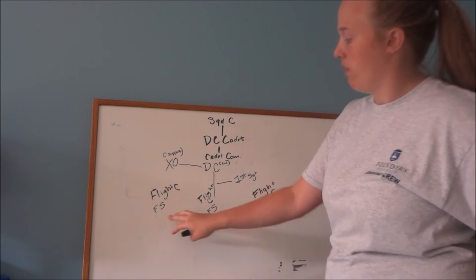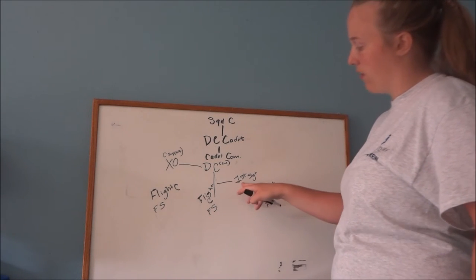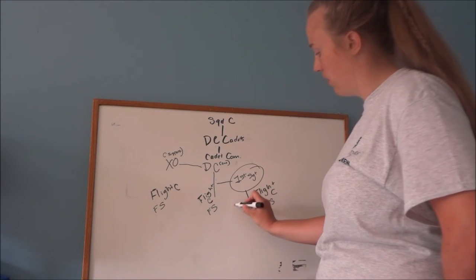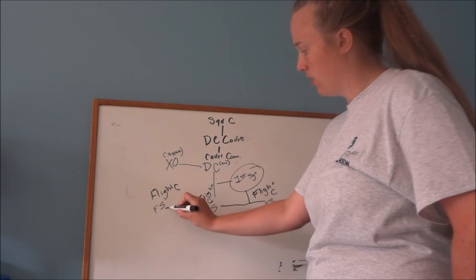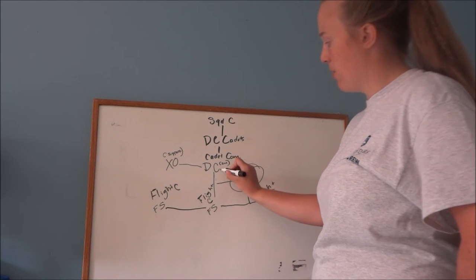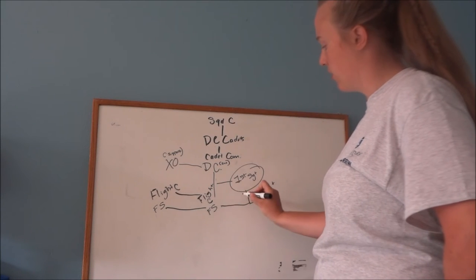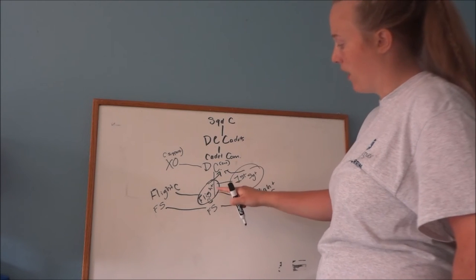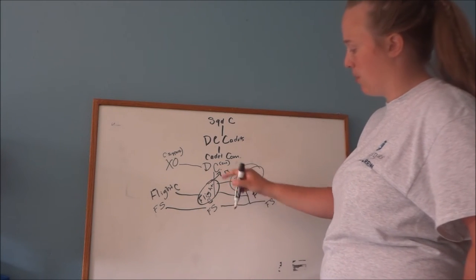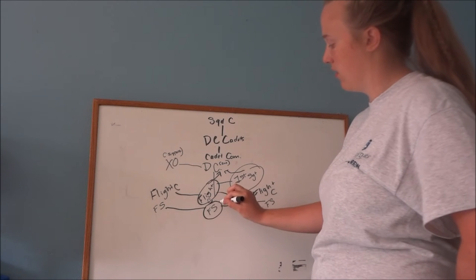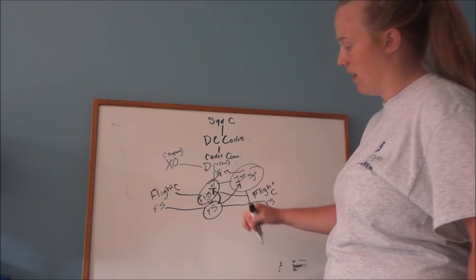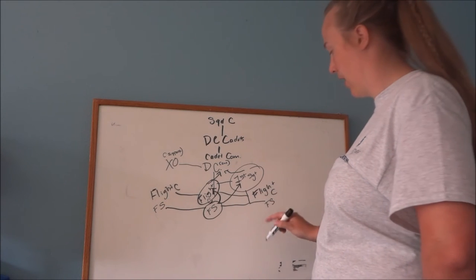So this would just be a three flight squadron and you have your first sergeant which is in charge of your flight commanders. Then you have your deputy commander, who's in charge of your flight sergeants. Your first sergeants and your flight commanders are both going to report to the deputy commander. While your flight sergeants are going to report to your first sergeant and your flight commanders. If that makes a little bit of sense. It's a little complicated.